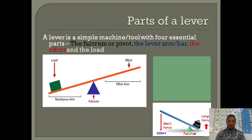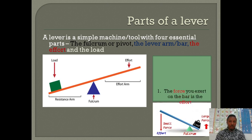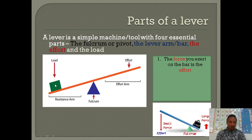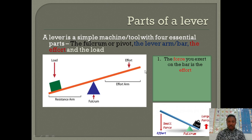The parts of a lever: the lever essentially has four parts — the fulcrum, the load, the effort, and the straight bar or lever arm. The force you exert on the bar is called the effort — whatever force is exerted by the person doing the work to move or lift the load. The weight of the object you lift is referred to as the load. The bar rotates about the pivot or fulcrum.